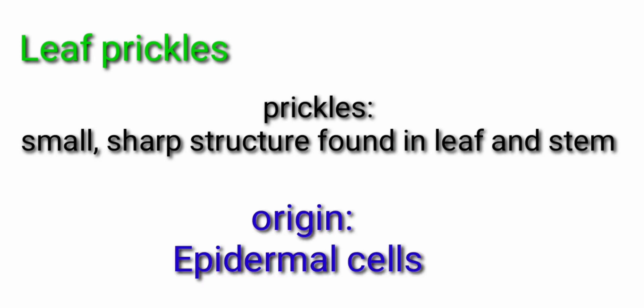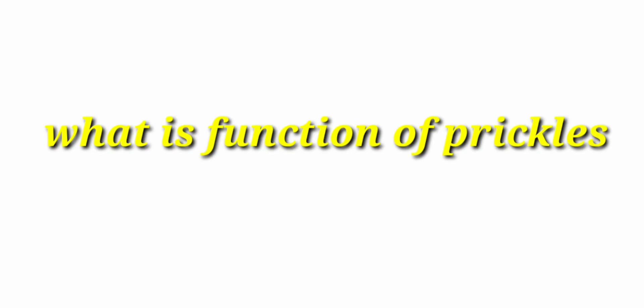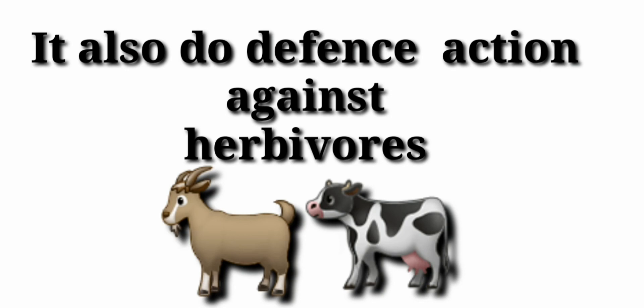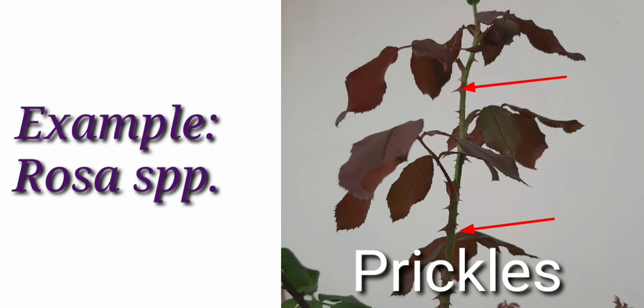Next one is the leaf prickles. Prickles are small sharp structures originating from the epidermal cells. What is the function of prickles? It also does the defense action against the herbivores as spines do. Example: rose species.